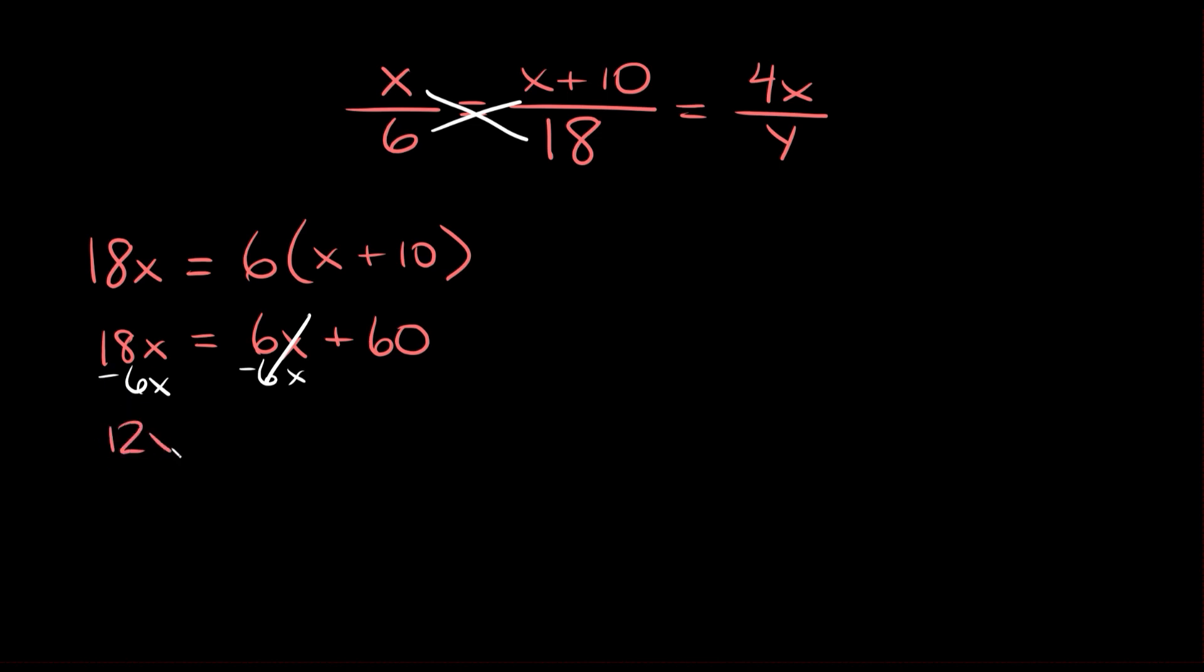So we get 12x equals 60. Then dividing both sides by 12 we get that x equals 5. Cool, so we just found out what x is equal to.